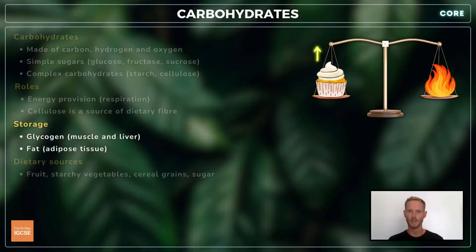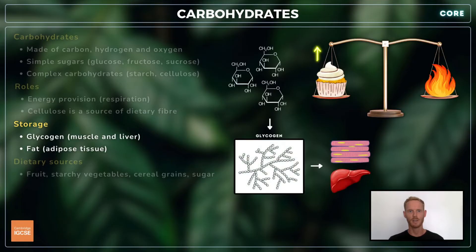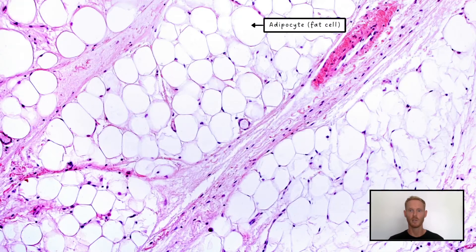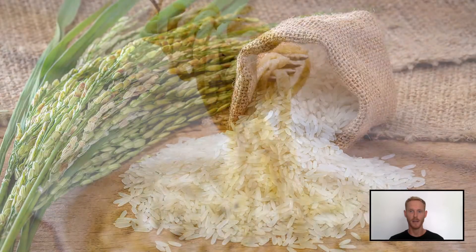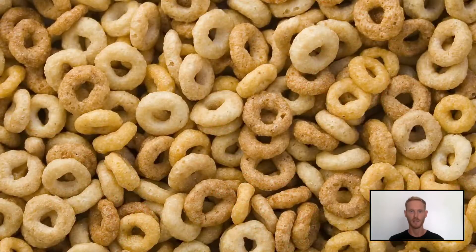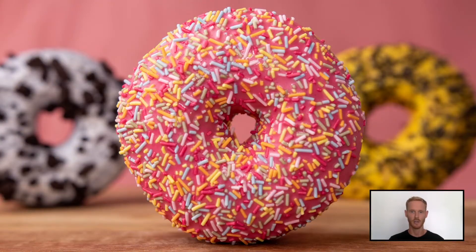If carbohydrate consumption exceeds an individual's short-term energy requirements, excess glucose is converted into glycogen and stored in the muscles and liver. If glycogen stores are full, the glucose is turned into fat and stored in cells called adipocytes. Carbohydrate-rich foods include starchy root vegetables, bread, rice, pasta, corn, fruit, breakfast cereals, and anything containing sugar.